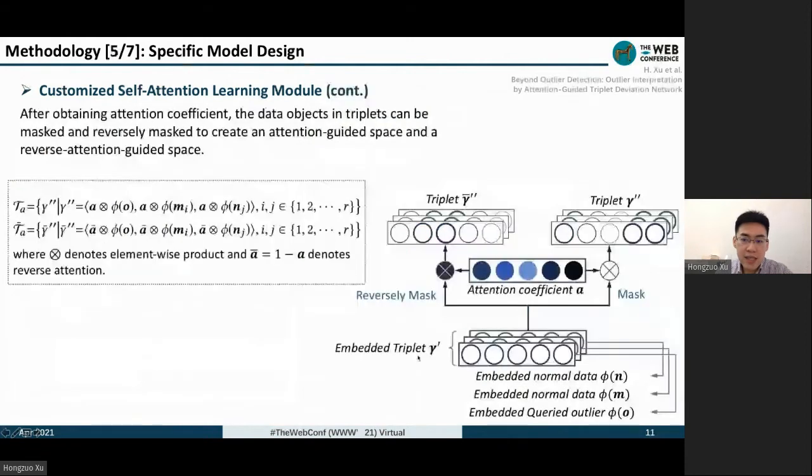Then the data is masked and reversely masked by attention coefficients. We use element-wise product to mask the attention coefficient to the embedded data objects. The reverse attention is one minus A. Here we've got two kinds of triplets by masking and reversely masking.